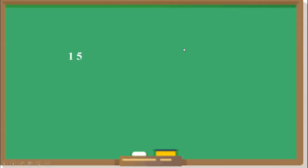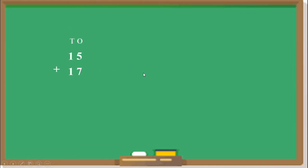Here we have the first number 15 and the second number is 17. We have to add these 15 and 17. This is the 1's place and this is the 10's place. For this we will use bundles — 1 bundle means 10 sticks, or we can say 1 bundle means 1 ten.